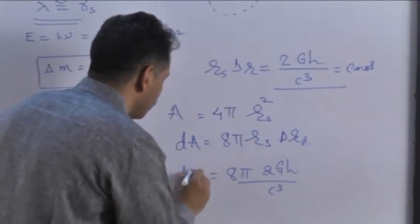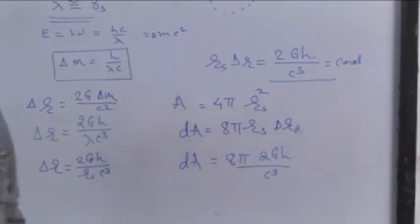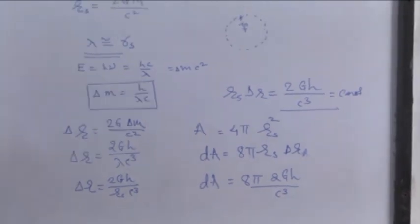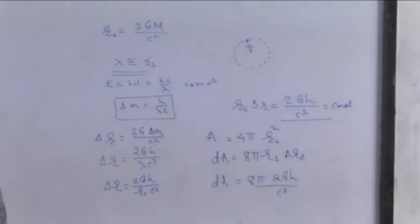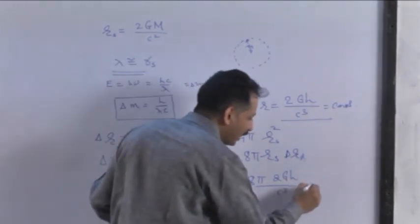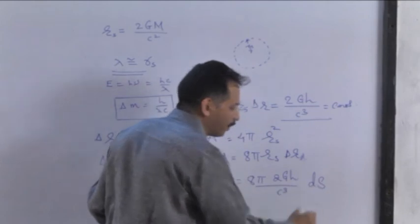This is the increasing amount of surface area of the Schwarzschild sphere. Now, if we consider more number of photons absorbed, we have to multiply this equation by that amount and that is the entropy. A unit of entropy is one photon absorbed.